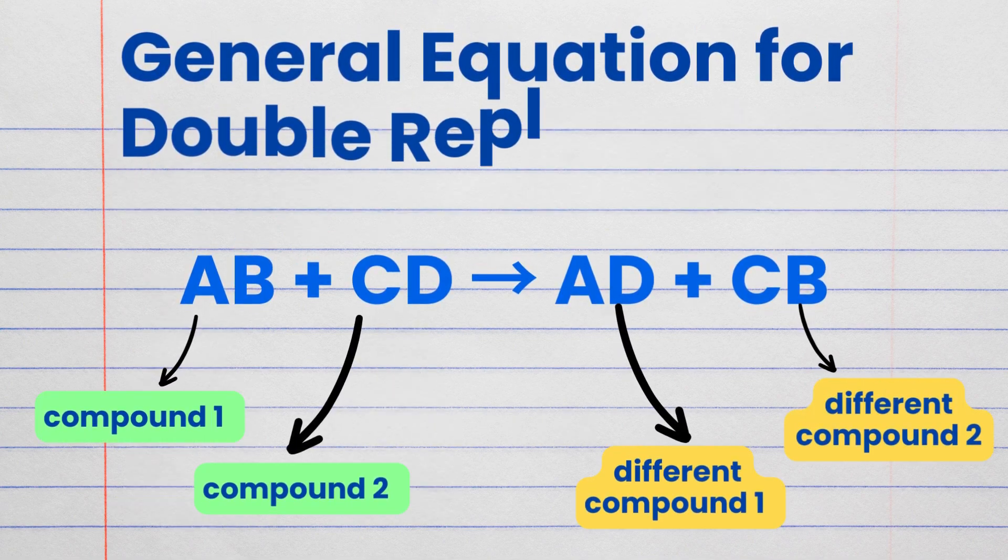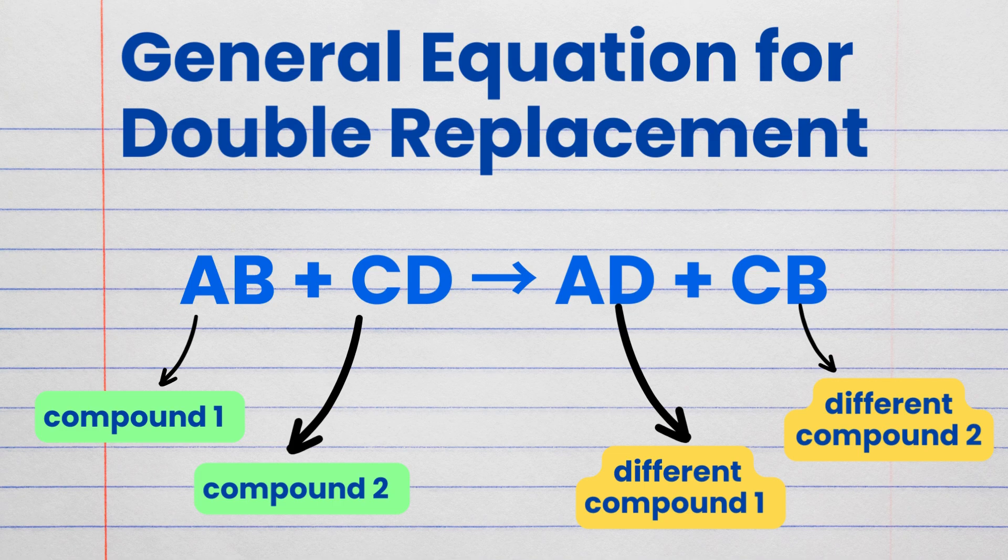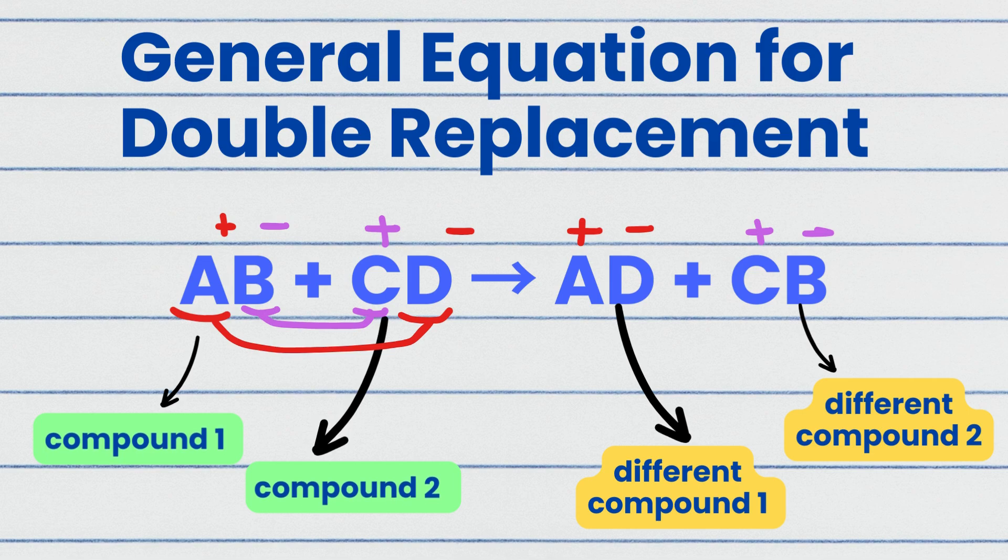The general equation for a double replacement reaction is AB plus CD gives AD plus CB. So here AB and CD represent two compounds. AD and CB represent two new compounds formed after the reaction.